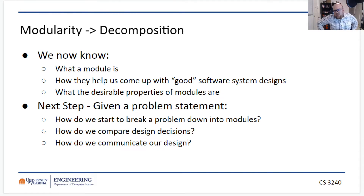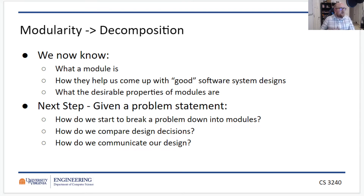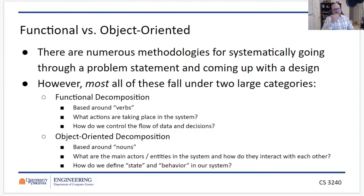So now the next step: given a problem and given that we know what kind of modules we want, how do we break the problem down into modules? How do we compare design decisions if two people want to break it down differently — which is better? And finally, how do we communicate these designs to the people who implement them such that they'll be implemented reliably to the design?